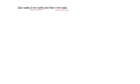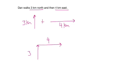Now, here's where it gets a little tricky. Dan walked 3 kilometers north and 4 kilometers east. So, we can again draw this out. And our resultant vector will go from beginning to end. Now, how do we find this?